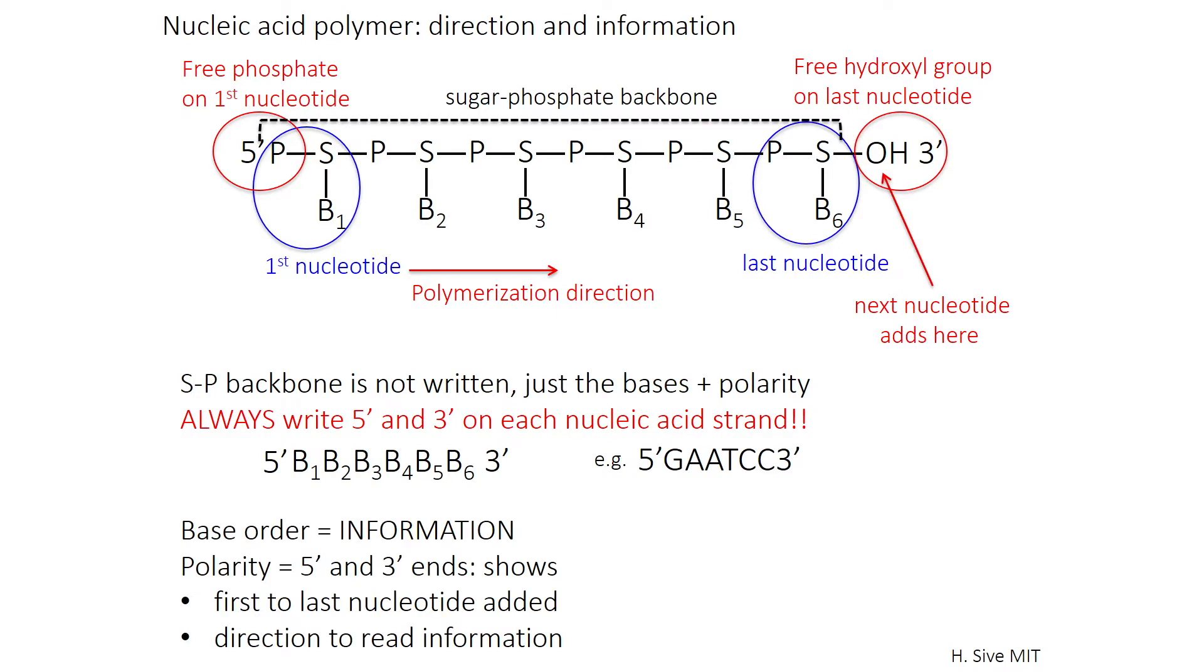The order of the bases relative to this 5' and 3' is the information in nucleic acid. It's what the genes are. It makes you who you are because of these two attributes of nucleic acid. The polarity, the 5' and the 3' end, shows the first to last nucleotide added and the direction in which to read the information.